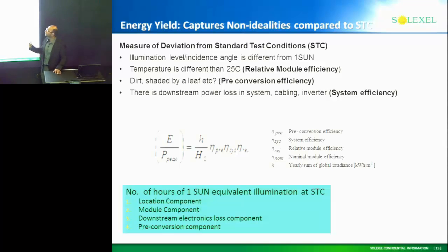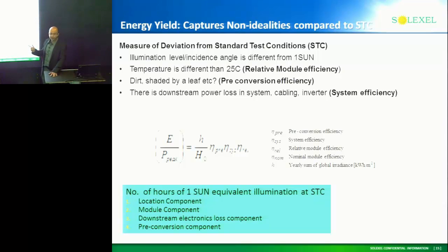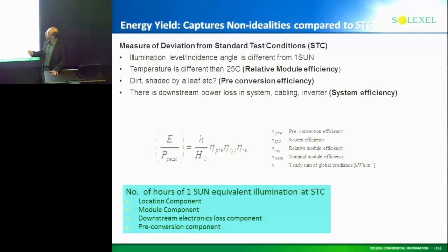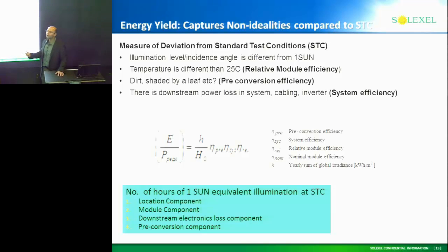Energy yield has several components. Number one: illumination level and incidence angle is not always normal in the field, and you test it under normal conditions. Second, the temperature is different than room temperature, which is how you test it at 25°C. Third, you've got dirt, bird poop, shading by leaves — all these other things going on. So how does the module perform under those practical conditions?